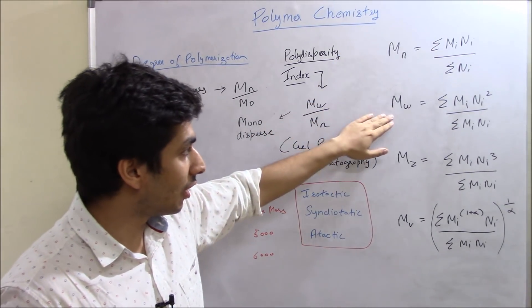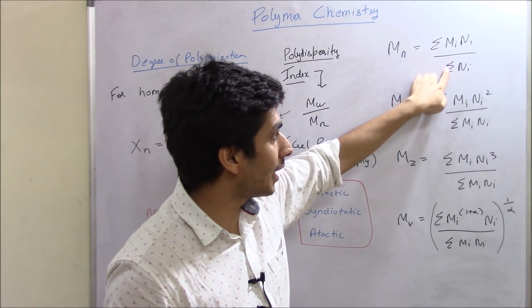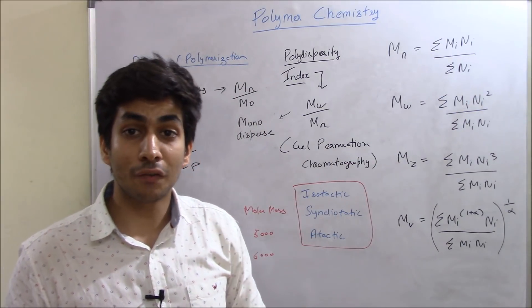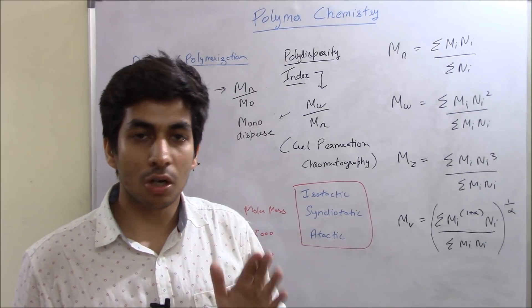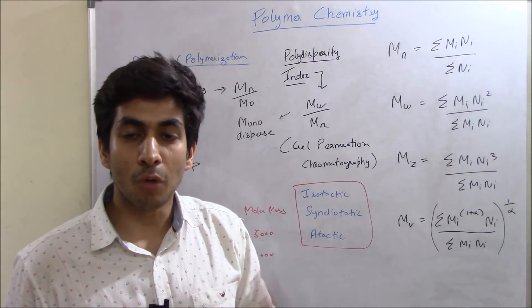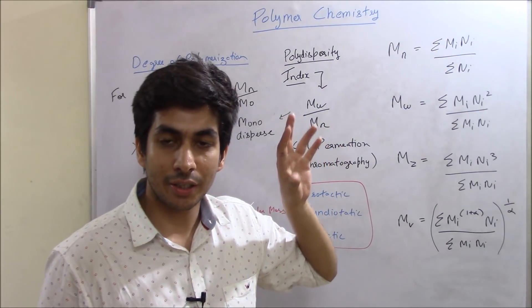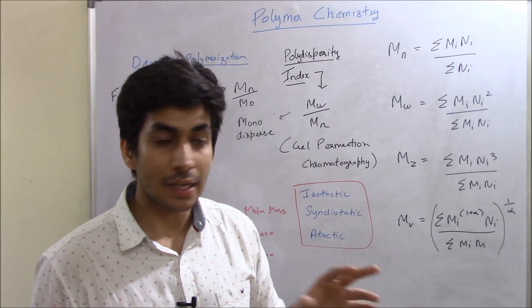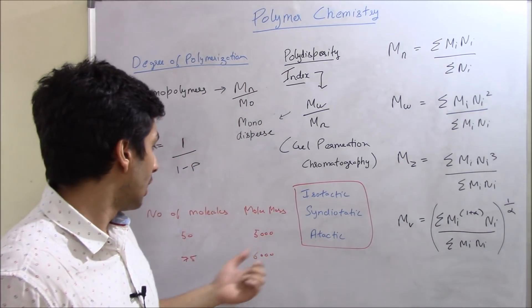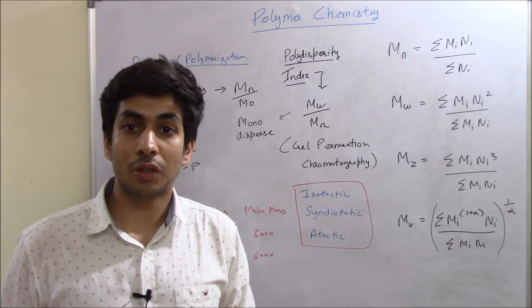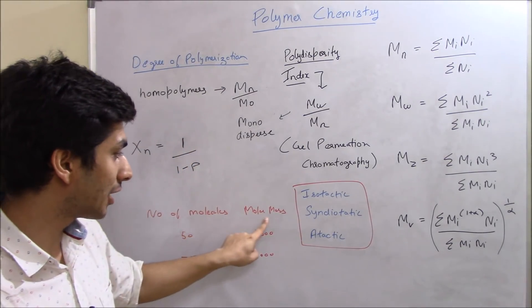Now we have number average molecular weight, MN, which is Sigma Mi Ni upon Sigma Ni. I'm going to tell you the meaning of each and every term. Mi is basically the molar mass. Ni is the number of molecules with that particular molar mass. I repeat again, Mi is the molar mass and Ni is the number of monomers of that particular molar mass. Like for example, I have taken a question from your CSIR NET December 2017 paper. This was for four marks.